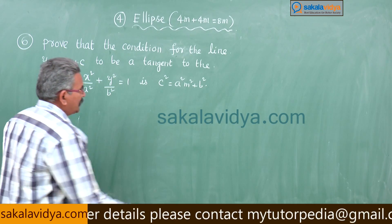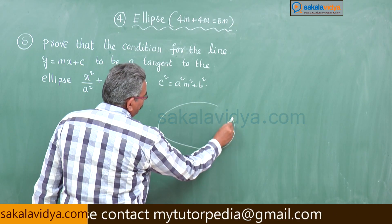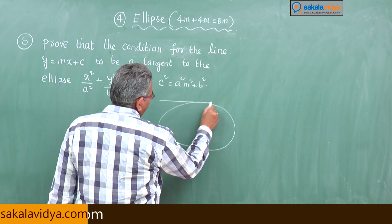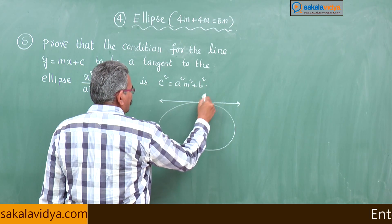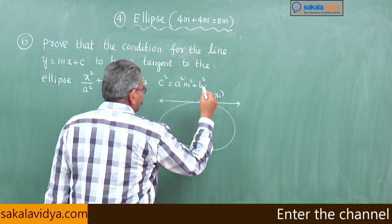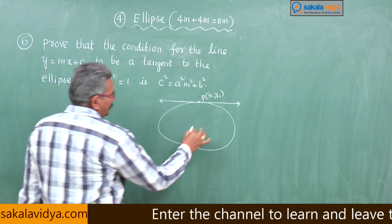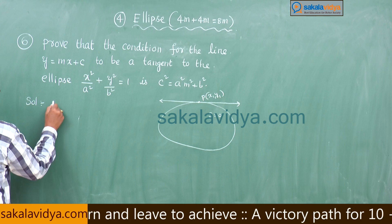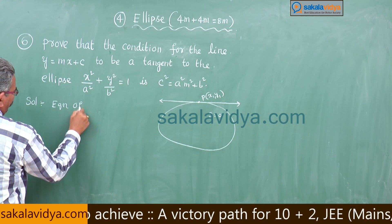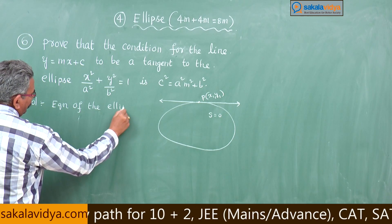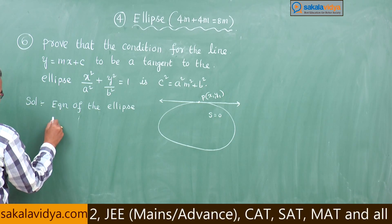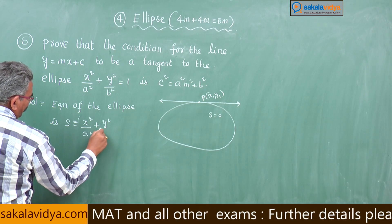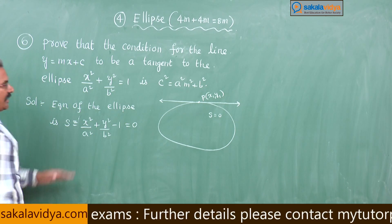Let us prove it. Suppose this is an ellipse and this is the tangent at point P(x₁, y₁). The equation of the ellipse is S = x²/a² + y²/b² − 1 = 0. This is the standard form.